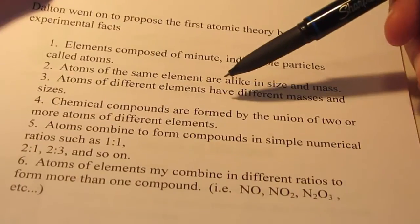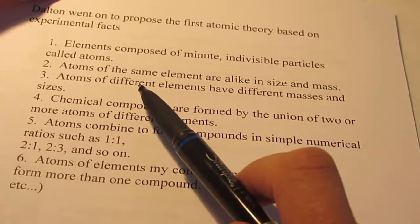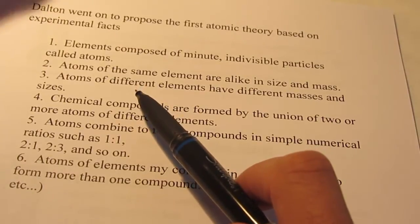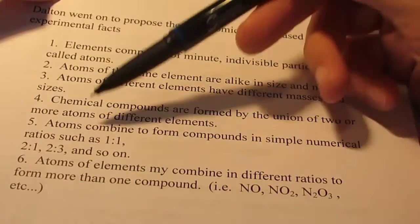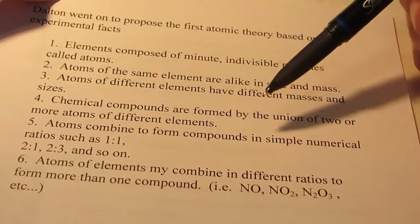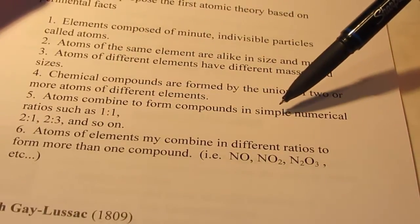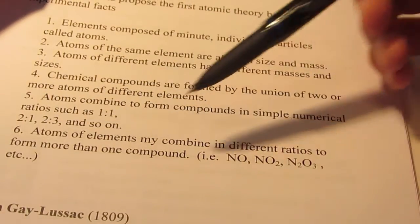Number three, atoms of different elements have different masses and different sizes. So an atom of gold will be a different size and a different mass than an atom of lead, or an atom of carbon, and so on. Chemical compounds are formed by the union of two or more atoms of different elements coming together. Atoms combine to form compounds in simple numerical ratios, such as one to one, two to one, two to three, and so on.